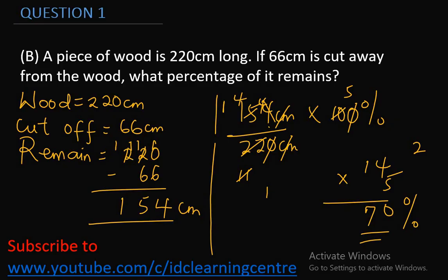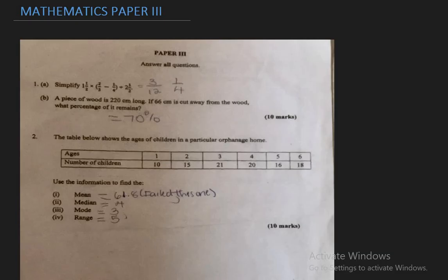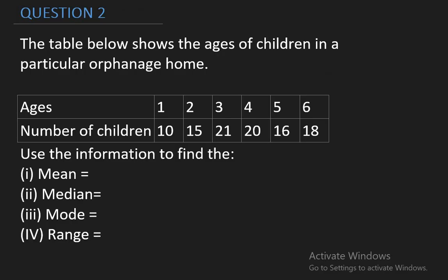The essay part, as you can see here, is just two questions. I've handled the first one, which is 1A and 1B. So, it will just take us through up to question 2. Question 2 says, the table below shows the ages of children in a particular orphanage home. We have the ages in the table and the number of children below the ages. Use the information to find the mean.